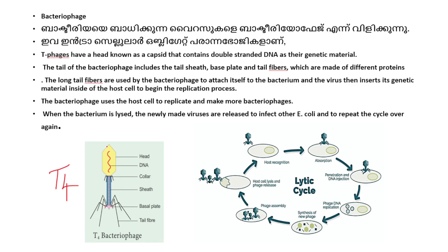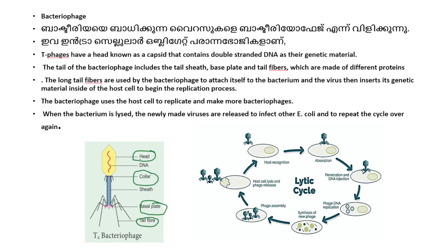This is the head region. This is the collar. The parts are: head, collar, basal plate, and tail fiber. The head is known as the capsid. This contains the genetic material — the DNA. The tail of the bacteriophage contains the tail sheath.